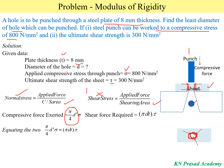Here π and π cancel, and d and d also cancel. From this equation we get: d = 4tτ / σ. Substituting the given values — t = 8 mm, τ = 300 N/mm², σ = 800 N/mm² — we get the diameter d = 12 mm.